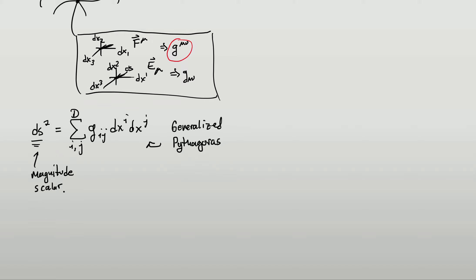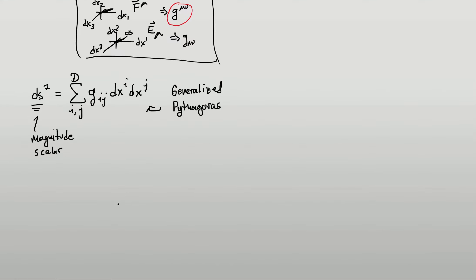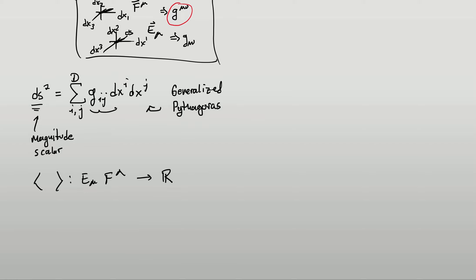We want to introduce now the concept of an inner product. The inner product, if you remember from chemistry or physics, shows up in many places. It's denoted with these brackets, and what it does is it takes two vectors — say e_mu and f_nu — and it outputs a scalar. That's kind of what this metric tensor did right here, so there is a deep connection between the metric tensor and the inner product, and that's what we want to investigate today.